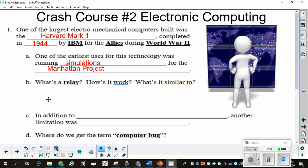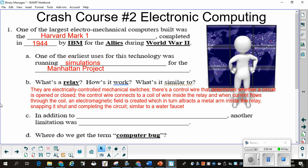What is a relay, and how does it work, and what is it similar to? Relays are electronically controlled mechanical switches. It's controlled by electricity, but it's a mechanical switch. There's a control wire that determines whether the circuit is open or closed. The control wire connects to a coil of wire inside the relay, and when current flows through the coil, that electromagnetic field is created, which attracts a metal arm inside the relay to snap shut, completing the circuit, similar to a water faucet.